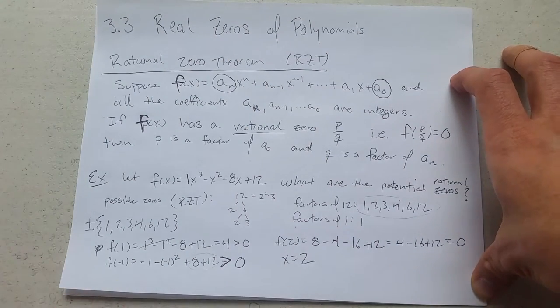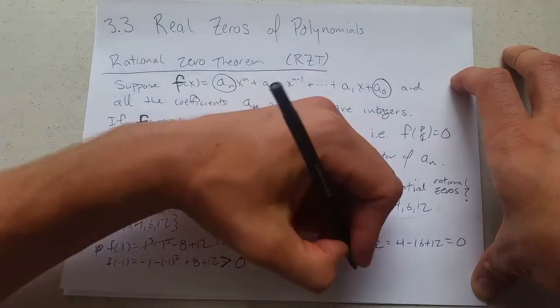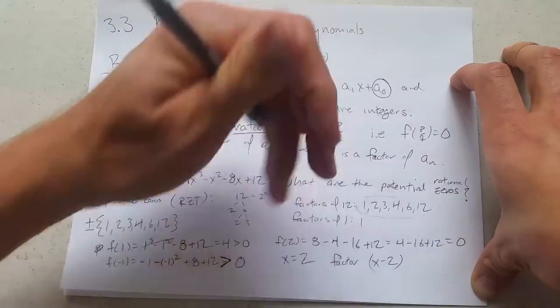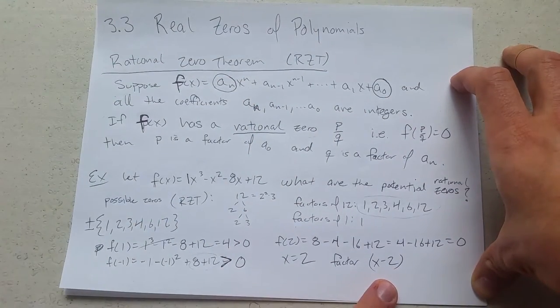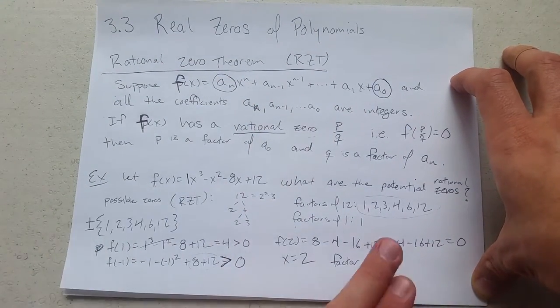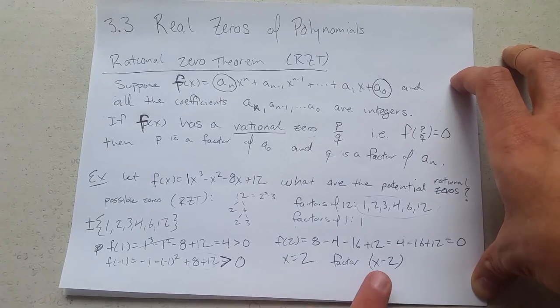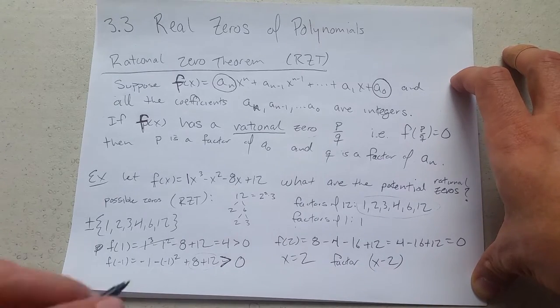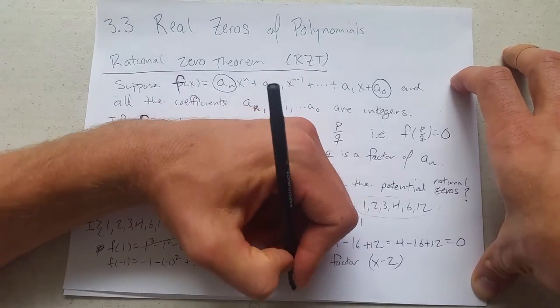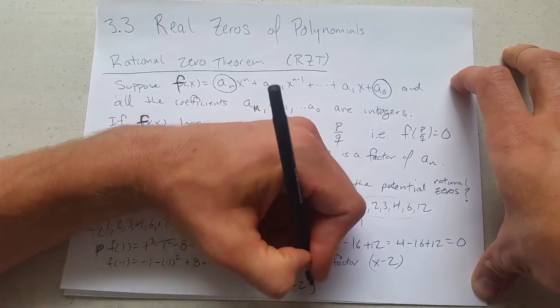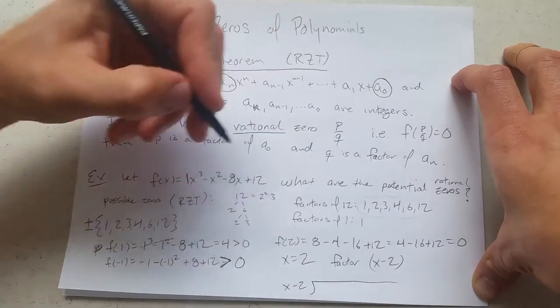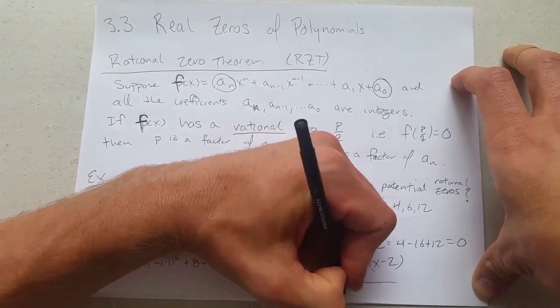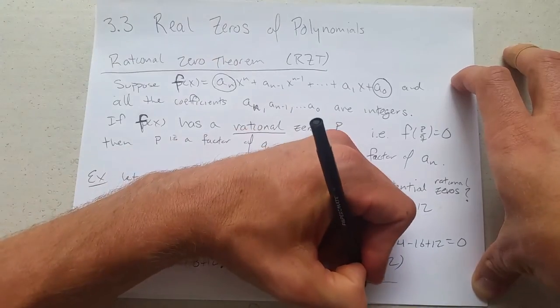So this zero corresponds to a factor of x - 2. You can keep going, and if you're lucky, you'll find another zero here. But what I recommend you do is use this factor and divide. So the next step you'll be doing...